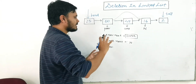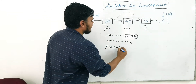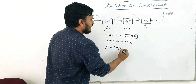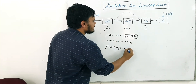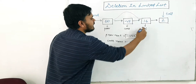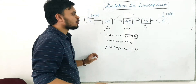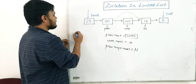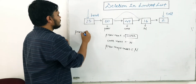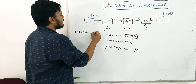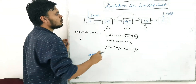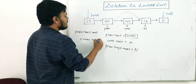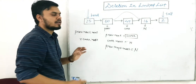I'm explaining this in a mathematical manner. Previous.next is nothing but current, and this current also has a next pointer pointing to n. So the overall code becomes: you simply write previous.next.next is equal to current.next. That's the code.